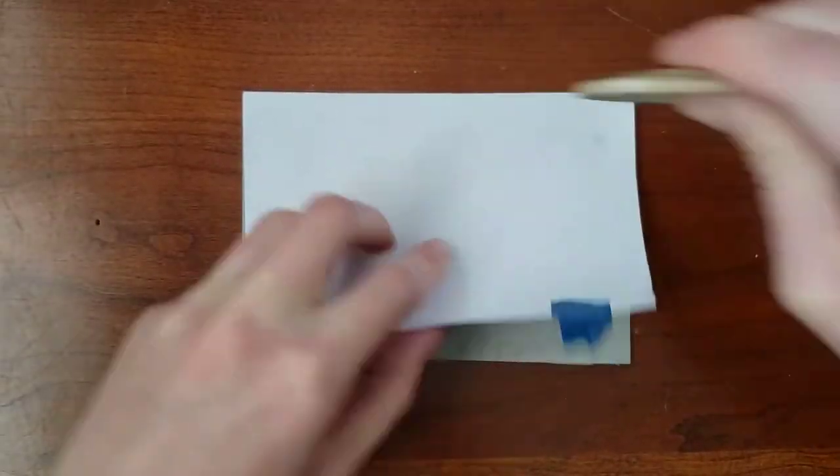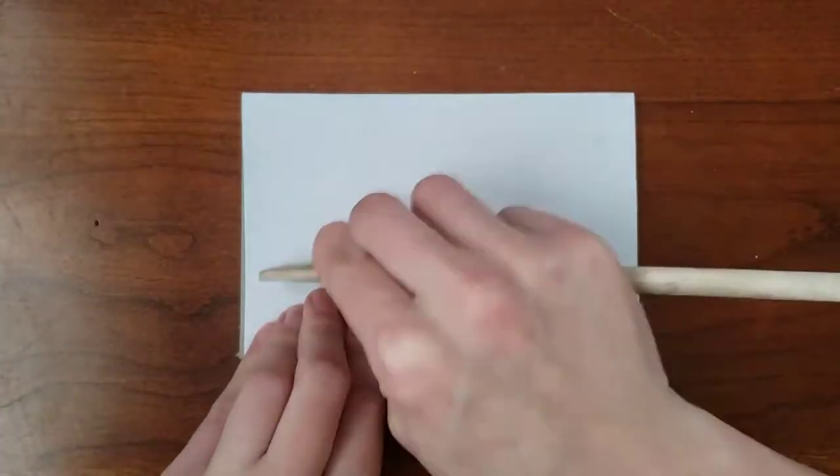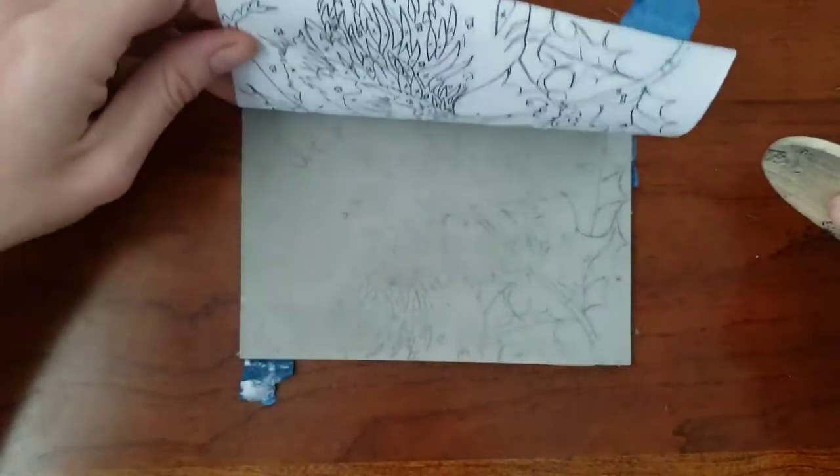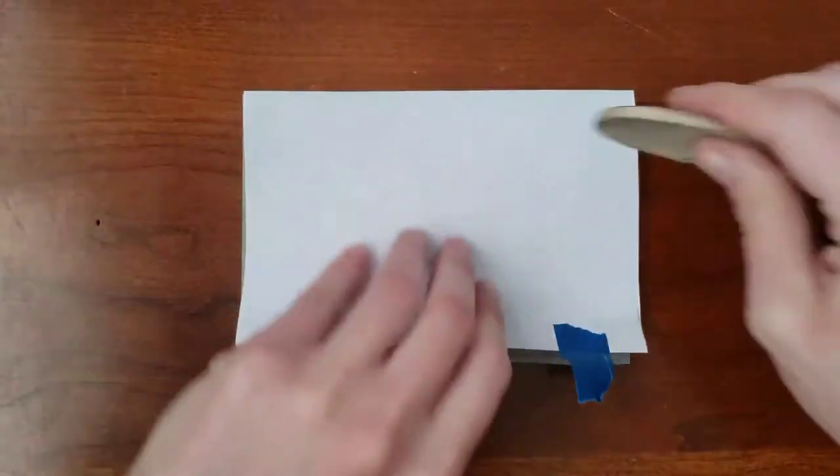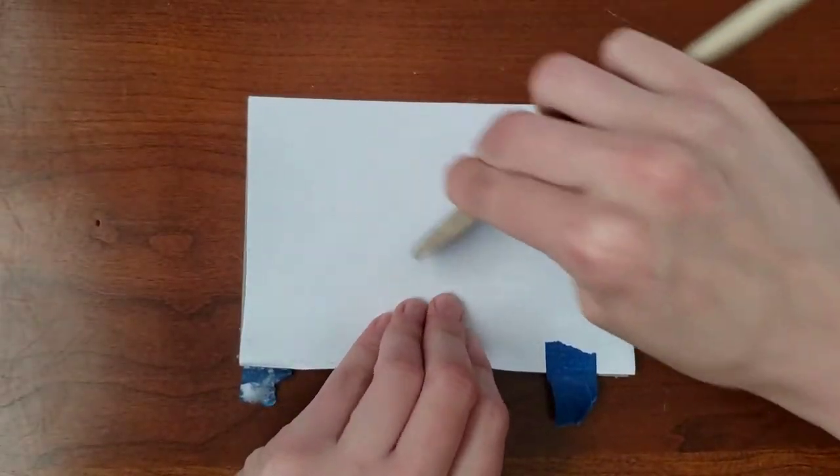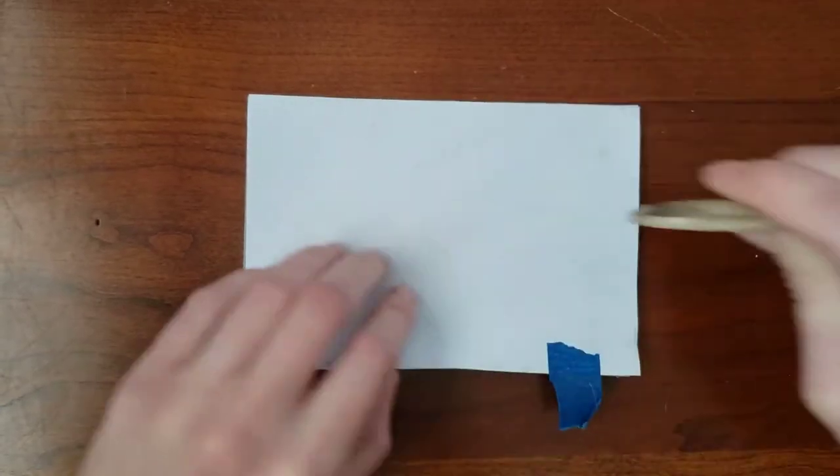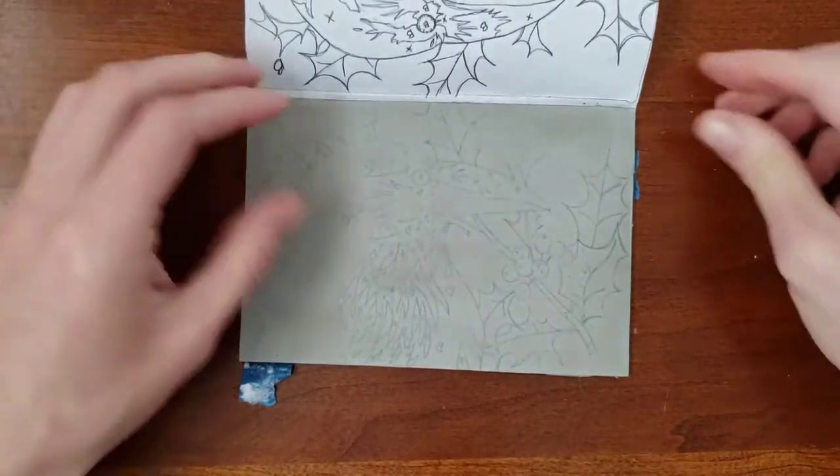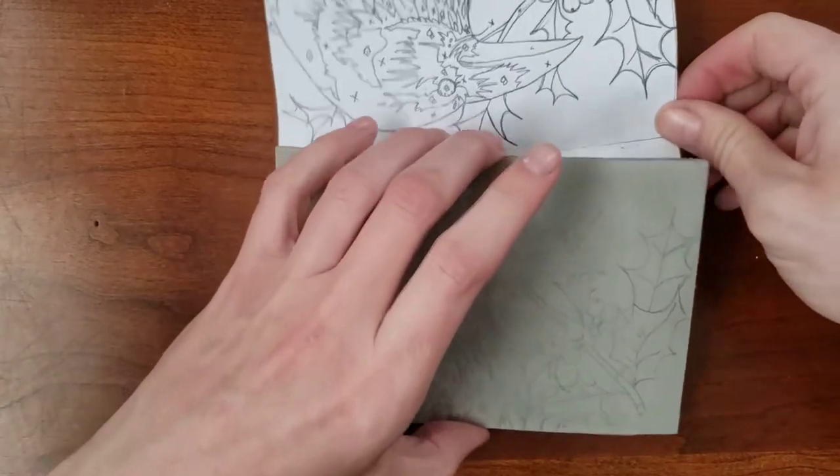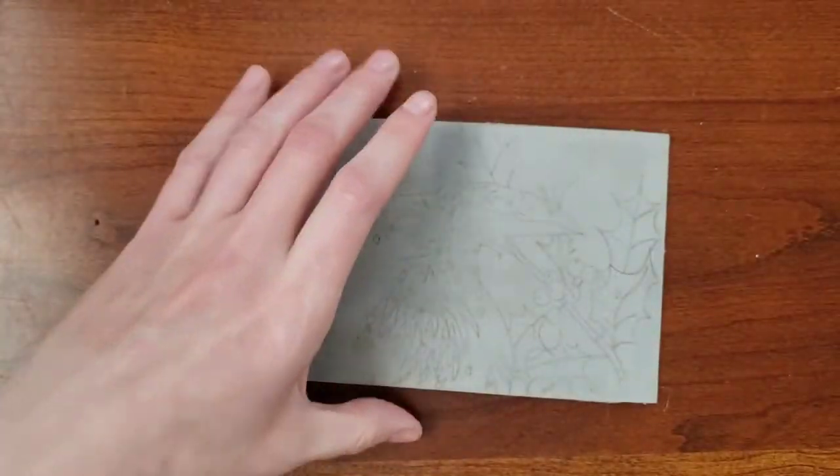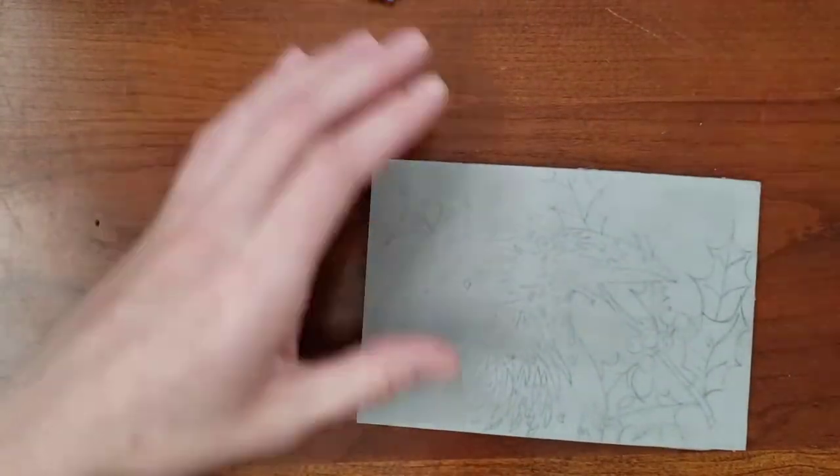If you have access to one, this can also be done using a press. Once you've finished going over the entire drawing, you can make corrections with your pencil if needed. The graphite you've just transferred to the block is very fragile and will smear or lift off easily.